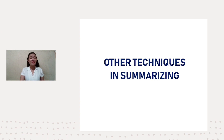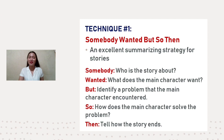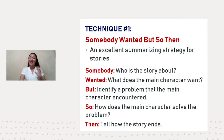Here are other techniques in summarizing — we have four. The first technique is called Somebody Wanted But So Then. This technique is an excellent summarizing strategy for stories. It starts with Somebody — who is the story about? Wanted — what does the main character want? But — identify a problem the main character encountered. So — how does the main character solve the problem? And Then — tell how the story ends.